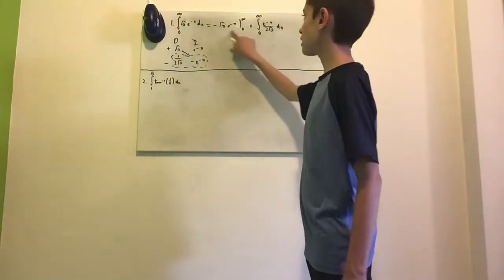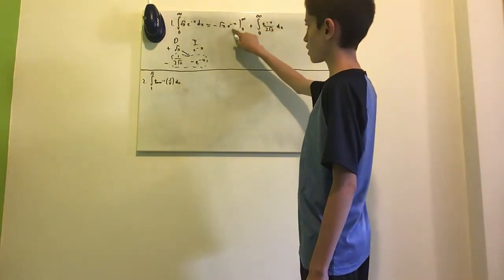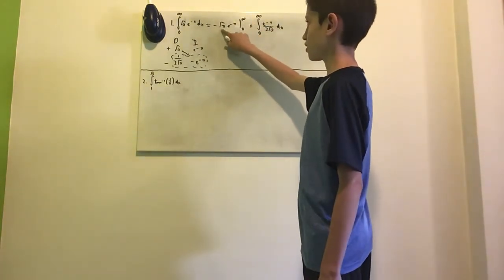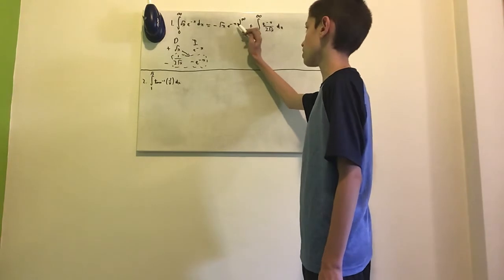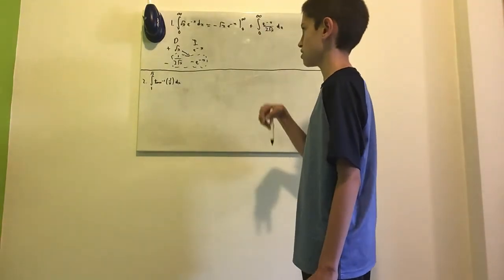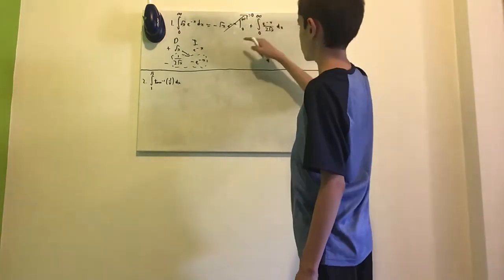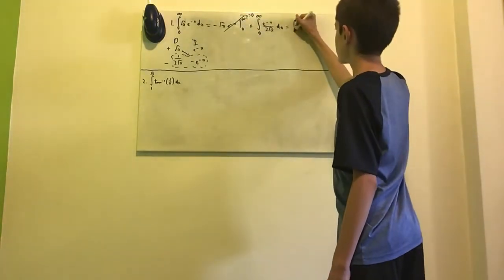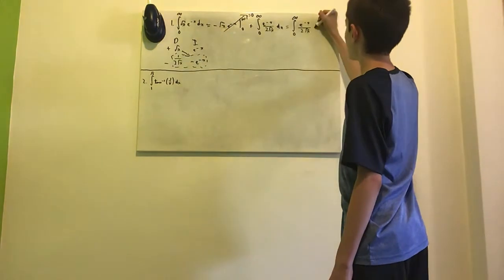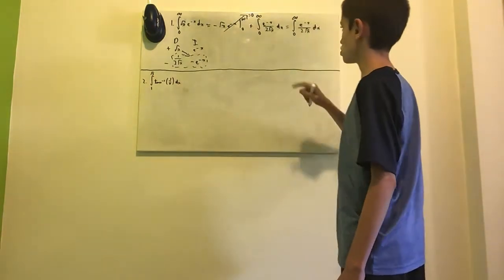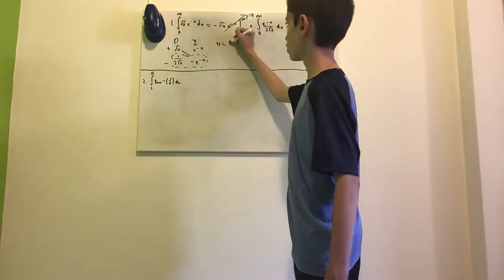We evaluate the boundary term: plugging in 0 gives simply 0, and plugging in infinity — this term goes to infinity but the exponential term goes to 0, and since exponentials are faster than square roots, this whole thing equals 0. So we are only left with the integral from 0 to infinity of e to the minus x over 2 square root of x dx.